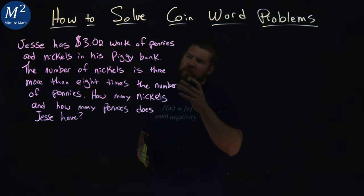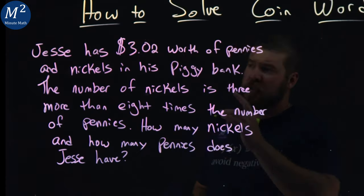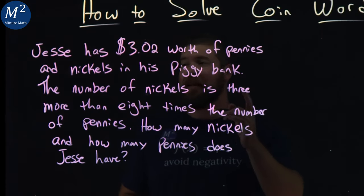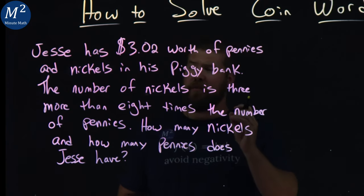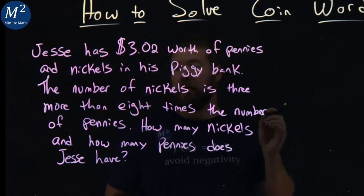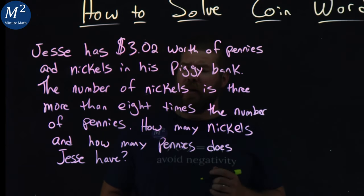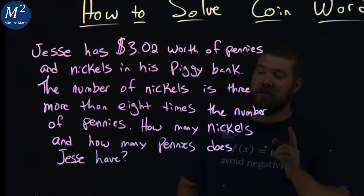We're given this word problem. Jesse has $3.02 worth of pennies and nickels in his piggy bank. The number of nickels is three more than eight times the number of pennies. How many nickels and how many pennies does Jesse have?